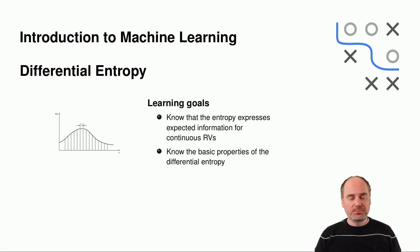Welcome to our next unit here in our chapter on information theory. Here I want to extend the discrete version of entropy to its continuous counterpart. So I want to introduce differential entropy, which expresses the expected information for continuous random variables and continuous distributions. And I want to go through basic properties, which will look fairly similar to what we did before.